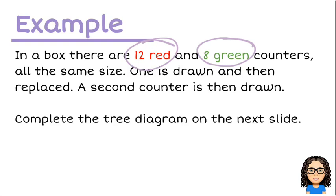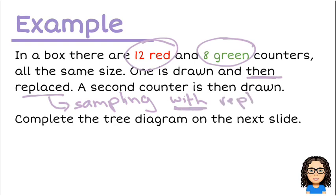One is drawn and then replaced. So this is talking about sampling with replacement. That's important for us to note because that's going to affect our probabilities. And then they draw a second counter. So let's try and use that information to complete the table.